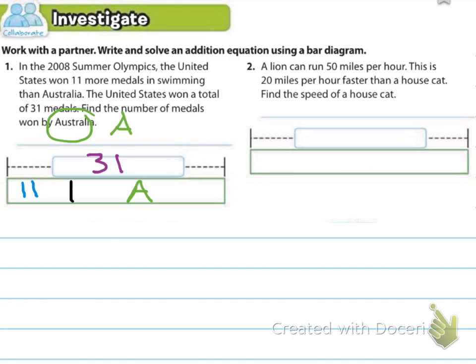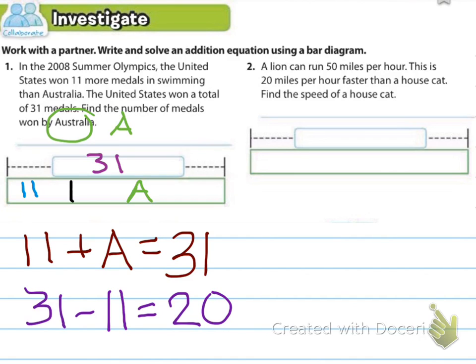Okay, for number one, hopefully you realize that the total diagram represents 31, which is how many the United States won, and that we're looking for the variable A, which is what I used. You could have used whatever variable you wanted to, but we're trying to figure out what A is if the United States won 11 more medals than Australia. So now I'm going to set up and write the equation, and then solve the equation.